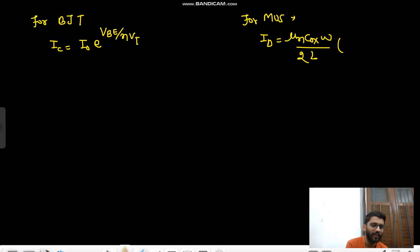So for MOSFET, mu_n·Cox·(W/(2L))·(VGS - VT)^2, right? So what would be your del_IC/del_VBE—that is gm—that equals I_naught·e^(VBE/(eta·VT)) upon eta·VT.